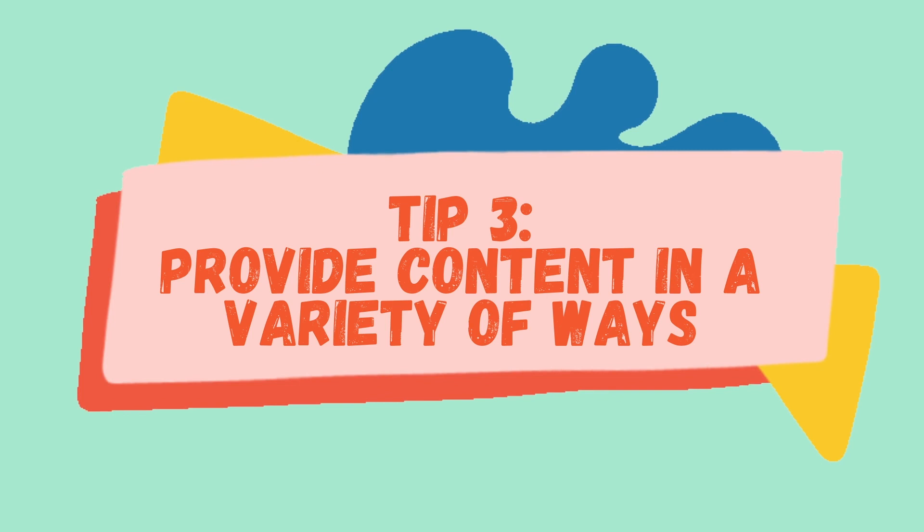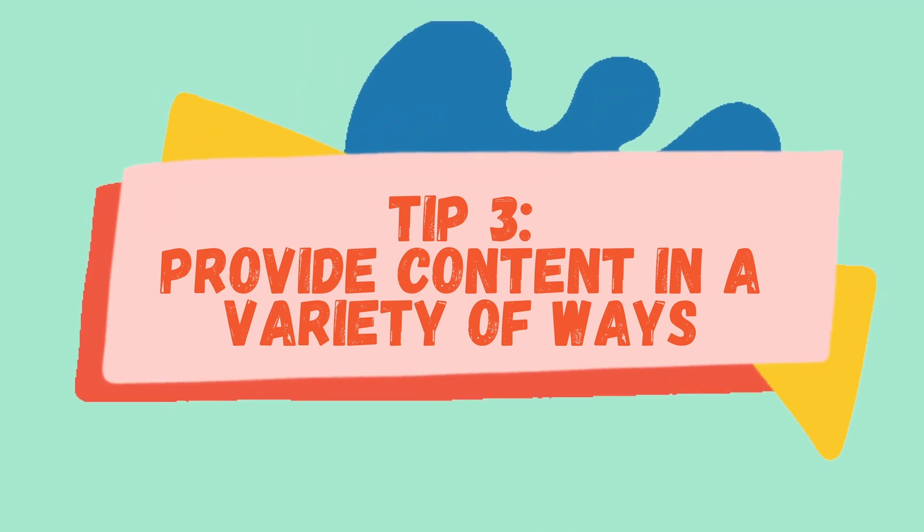Tip number three to keeping your kids more engaged in the content is to provide learning content in a variety of ways. If you're used to normally delivering content via just lecturing while they take notes, try to mix it up and change the way that you're delivering content or deliver it in multiple ways. If your students are used to completing reading assignments over and over again, it might be nice to offer them a choice between reading, listening to a recording while following along with the book, or watching a video that provides the same kind of content. If you give your students the choice of different ways to receive material, they might be more receptive to learning because they can choose what works best for them.